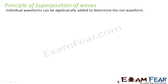It talks about how individual waveforms can be algebraically added to determine the net waveform. Now, waveform is nothing but the outline of a wave — the up and down of the wave. When I talk about the waveform, it tells about the overall motion of the wave. It doesn't talk about individual particles or individual crests and troughs of the wave.